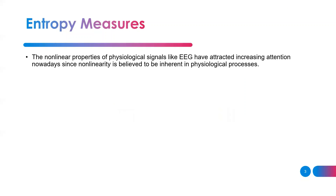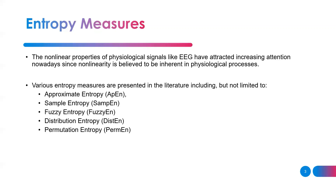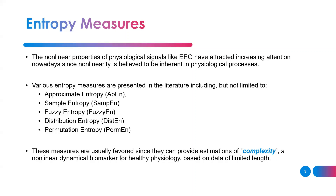Entropy measures the nonlinear property of many signals, including those from the human body like EEG, EMG, and ECG. These have attracted increasing attention since nonlinearity is believed to be inherent in physiological processes. These entropy measures are usually favored since they can provide estimation of complexity, and they have been heavily utilized as feature extraction techniques in the recent literature.